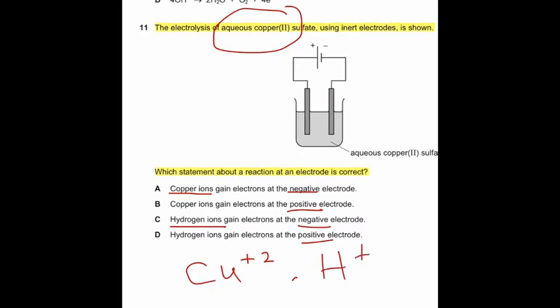When we compare the reactivity of these two ions, copper ions are least reactive. That's why they will discharge at negative electrode. Hydrogen ions will not discharge. Copper ions will discharge at negative electrode and they will gain electrons or reduction will happen. So, correct answer is option A. Copper ions gain electrons at negative electrode.